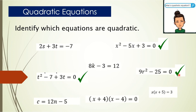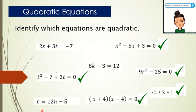Do we still have a quadratic equation among the list? Good — the quantity x plus 4 times the quantity x minus 4 equals 0 is a quadratic equation. At a glance, it seems to be linear, but the expression x plus 4 multiplied by x minus 4 can be expanded and will result in a quadratic equation. And lastly, x times the quantity x plus 5 equals 3, if expanded, will also result in a quadratic equation. So among the list, we have 5 quadratic equations. The remaining equations — 2s plus 3t equals negative 7, 8k minus 3 equals 12, and c equals 12n minus 5 — are all examples of linear equations.